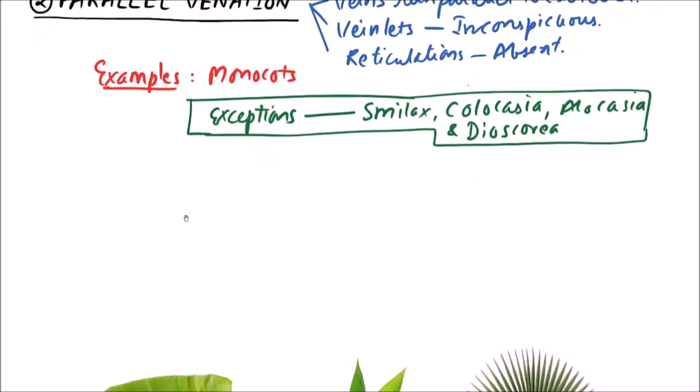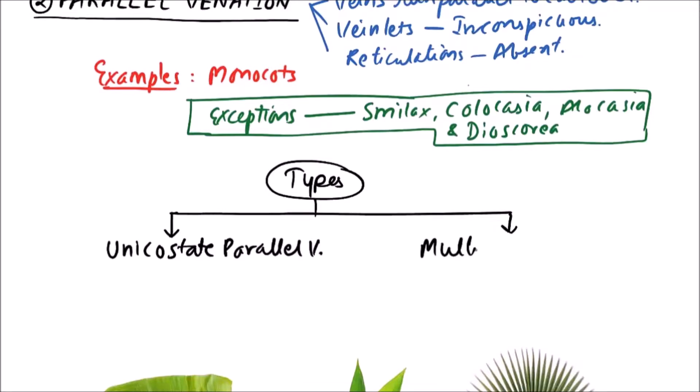Now, the types of parallel venation. Again, we can classify the parallel venation into two types on the basis of number of principal veins. First one is unicostate parallel venation. Another one is multicostate parallel venation.